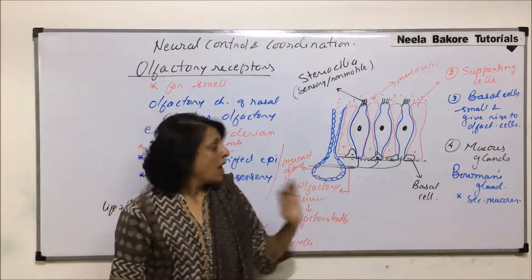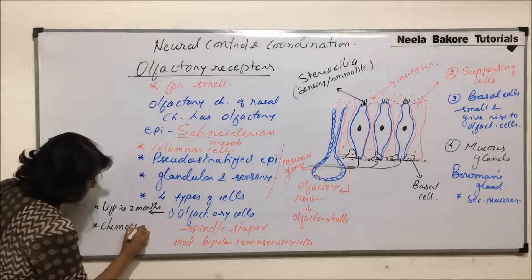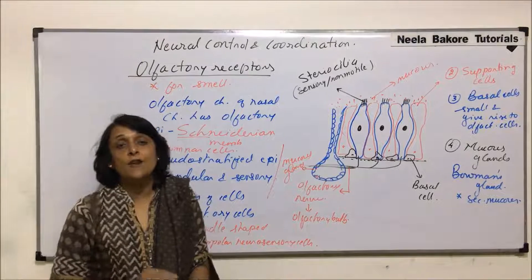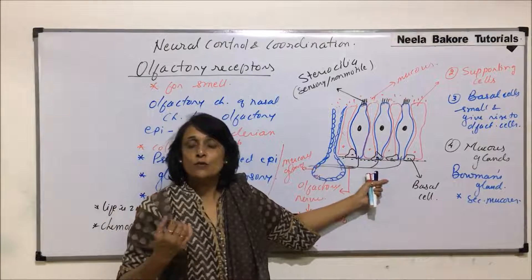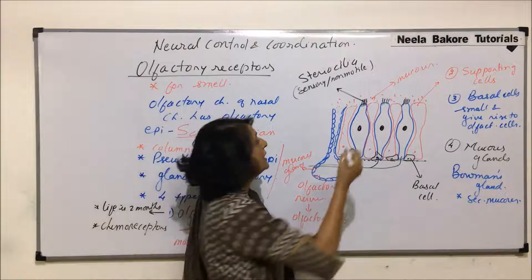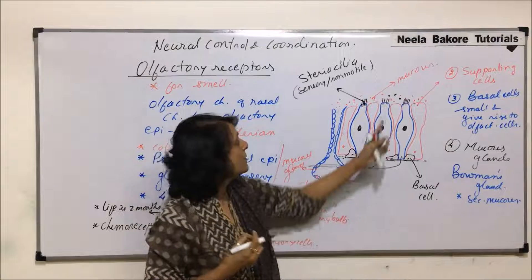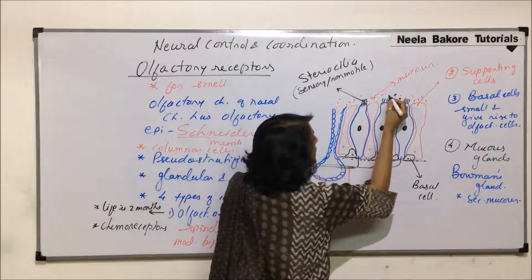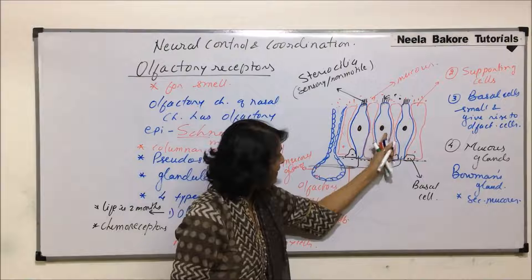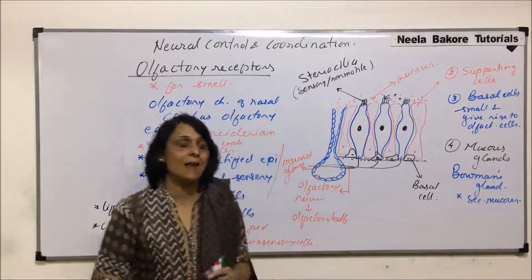These olfactory cells are actually chemoreceptors — they perceive chemicals. When we inhale, aromatic particles in the air come into the nose and dissolve in the mucus layer. As soon as an aromatic particle dissolves and triggers the stereocilia, an impulse is generated. This impulse is carried by the olfactory nerve to the olfactory lobe, and that is how we are able to detect smell.